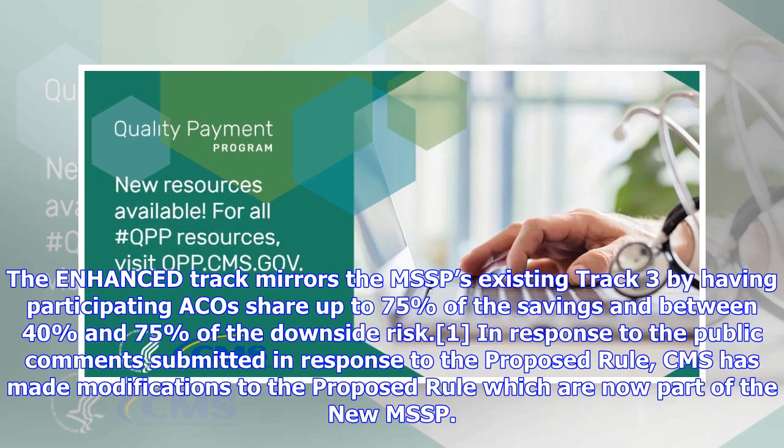The Enhanced Track mirrors the MSSP's existing Track 3 by having participating ACOs share up to 75 percent of the savings and between 40 and 75 percent of the downside risk. In response to public comments submitted on the proposed rule, CMS made modifications which are now part of the new MSSP.